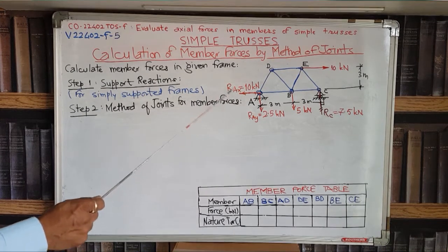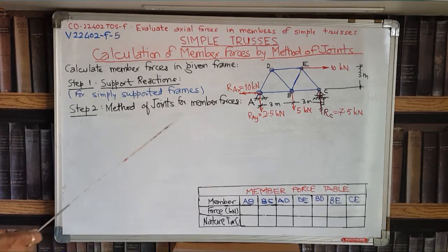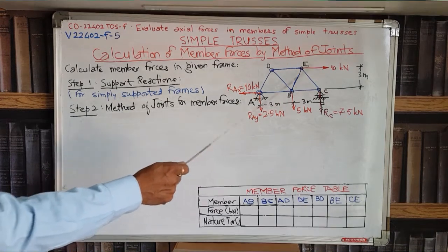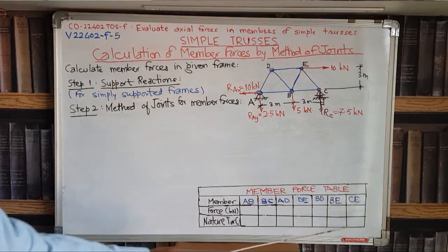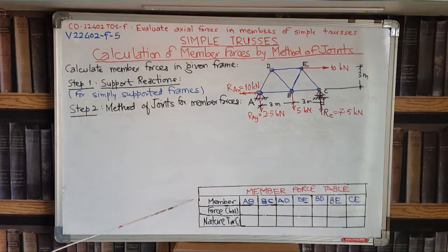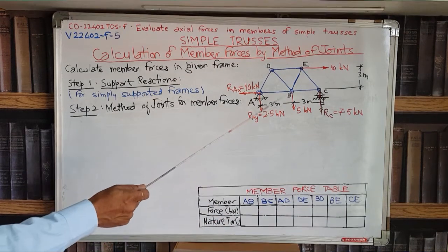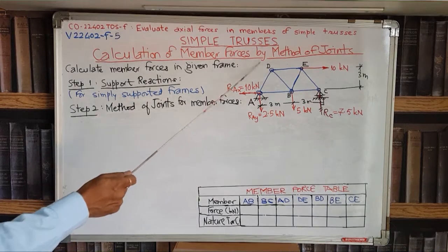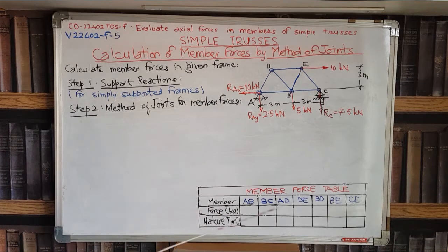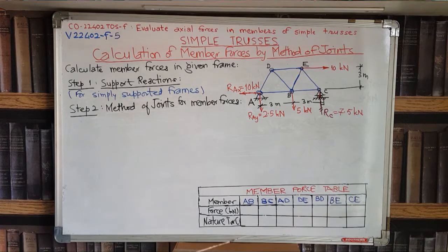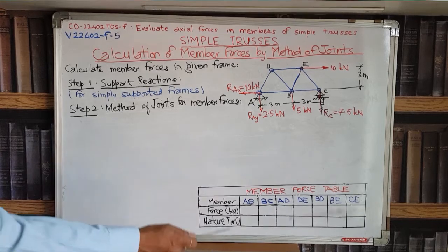In this problem, we have to find out the value of that force by method of joints. There are seven members in total: AB, BC, AD, DE, EC, BD and BE. We will be getting this type of table as the final answer, with each member listed. We will be putting the numerical values from our calculations and finally writing whether each member is in tension or compression. So the target is to fill this table.